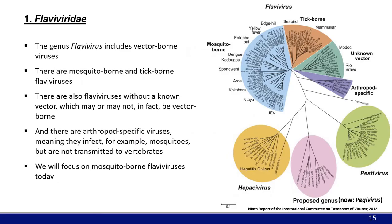The first family we'll talk about is the Flaviviridae. There are four genera: Flavivirus, Hepacivirus, Pegivirus, and Pestivirus. All arboviruses are part of the Flavivirus genus, which is divided into mosquito-borne viruses, tick-borne flaviviruses, viruses without any known vector, and arthropod-specific viruses. We will focus on mosquito-borne flaviviruses.